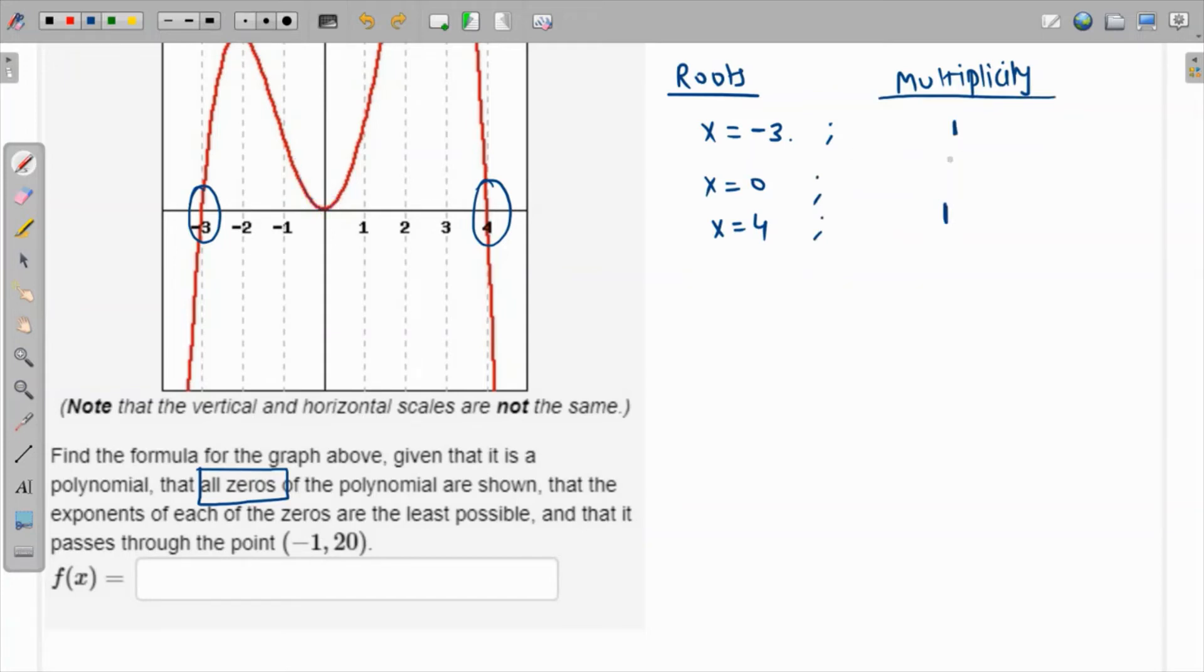So the function is definitely going to look like—the polynomial will be—since the roots are given, what are the factors? The factors will be, we move these three things over on the left, so that will be x + 3, x (because x - 0 is just x), and x - 4. So the function is going to be some constant a times (x + 3) times x times (x - 4).